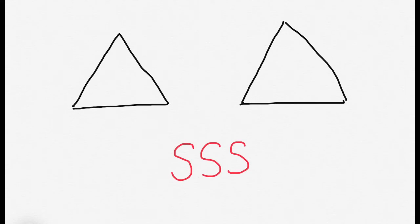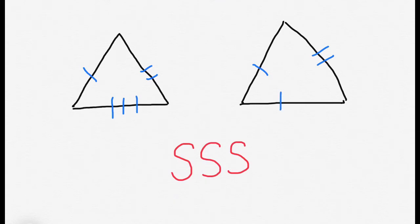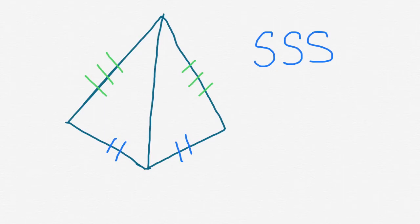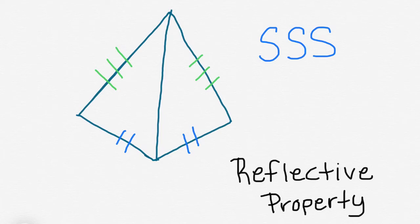The Side-Side-Side postulate indicates that all three sides of the triangle are congruent. This is denoted by markings — one mark indicates congruence with another side, two markings show those two sides are congruent, and three markings indicate those two sides are congruent. The third side of the triangle is the line in the center, which utilizes the reflective property of congruence. So these two triangles are congruent by the SSS postulate.